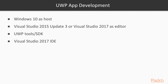Now let's start with UWP app development. To get started, you need the Windows 10 operating system as the host and Visual Studio 2015 Update 3 or Visual Studio 2017 as the editor with the UWP Tools or SDK.